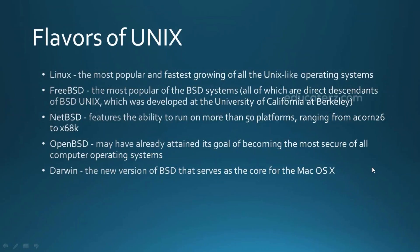We also have Red Hat, Fedora, and many others. There is a free version of Berkeley Software Distribution called FreeBSD, developed by the University of California at Berkeley. We also have OpenBSD, and Solaris is now available as a free version under the name FreeSolaris. Darwin is very famous in Apple computers — for example, the base of the Mac operating system is Darwin, which runs on a UNIX kernel.